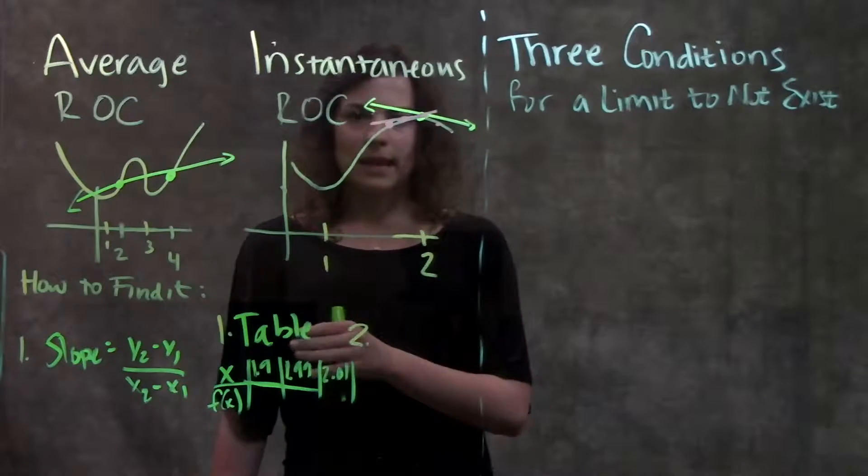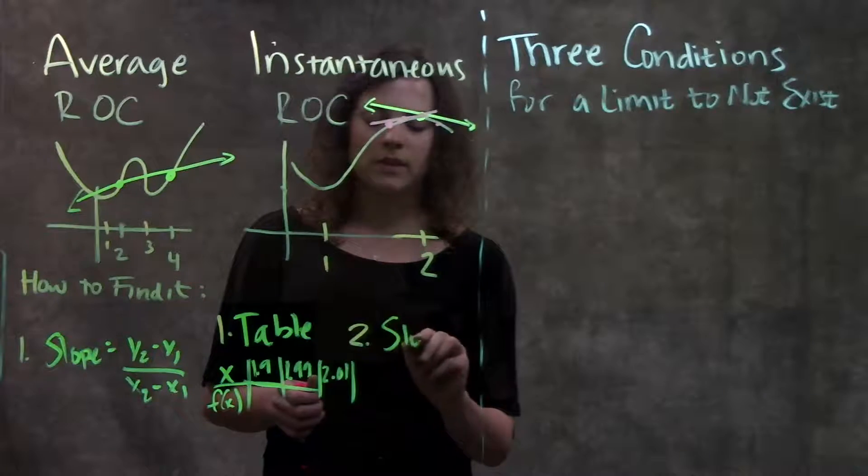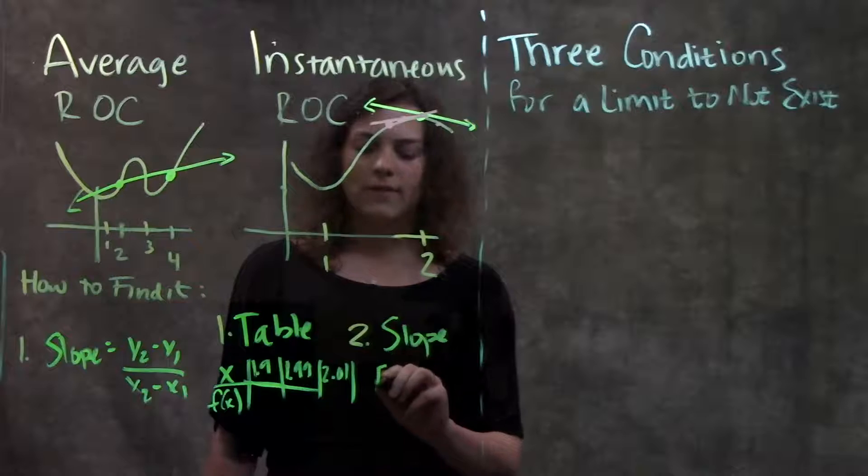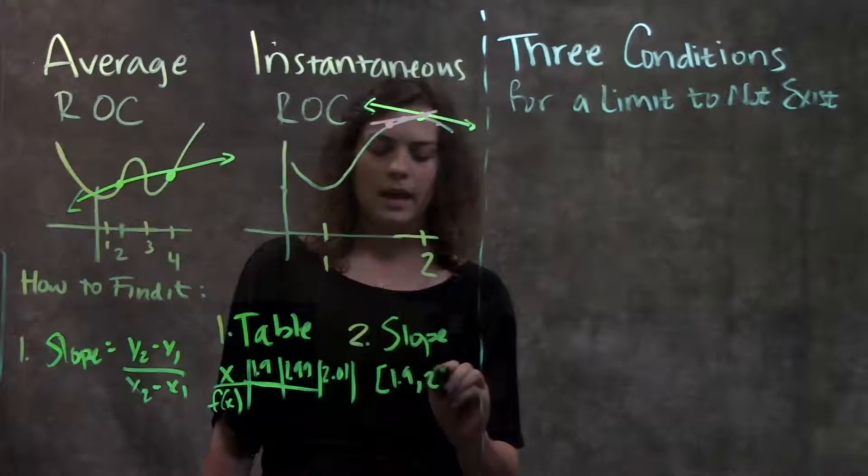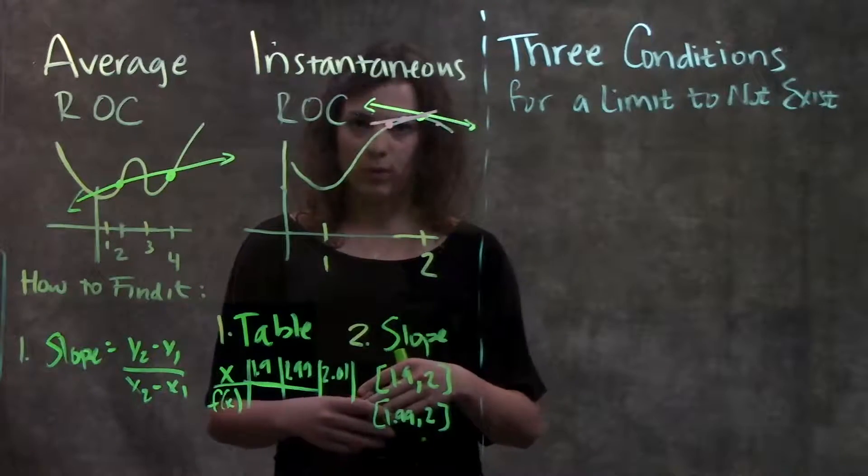Step one is make a table of values approaching my point of interest. Step two is actually find the slope between those values and what I'm interested in. So I find the slope between 1.9 and 2, 1.99 and 2, and so on until I go through all my points.